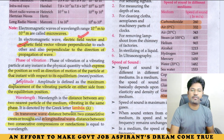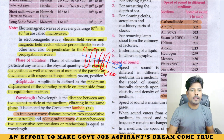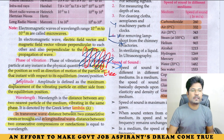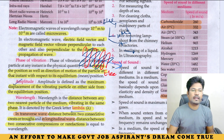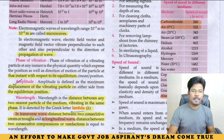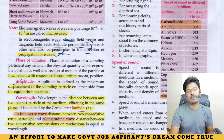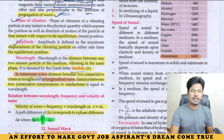In an electromagnetic wave, the electric field vector and the magnetic field vector vibrate perpendicularly to each other. Using X, Y, Z axes: if the wave moves along the Z axis, the magnetic field is along the X axis and the electric field is along the Y axis — all three are perpendicular to each other. The electric and magnetic fields are also perpendicular to the direction of propagation.